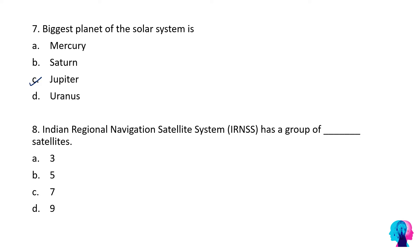Eighth question: Indian regional navigation satellite system IRNSS has a group of how many satellites? The answer is seven.